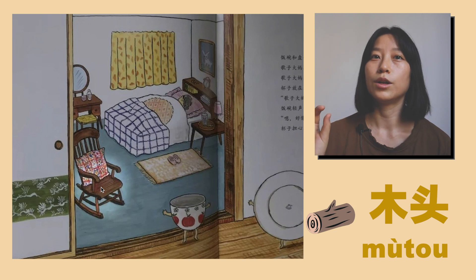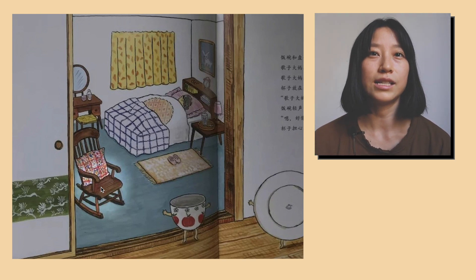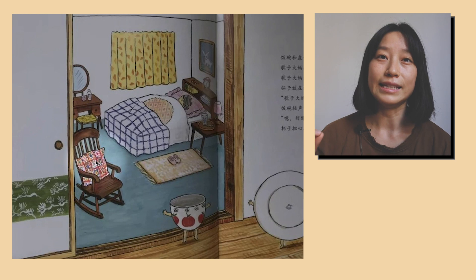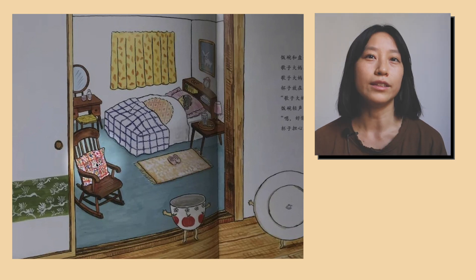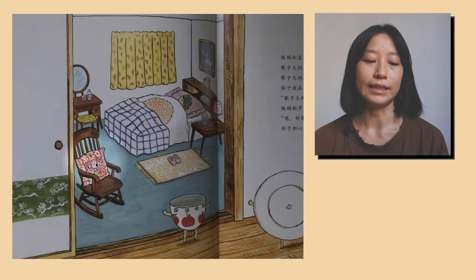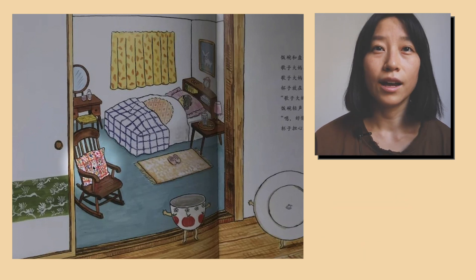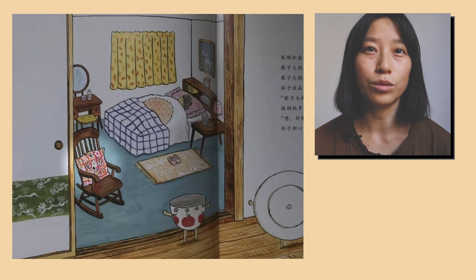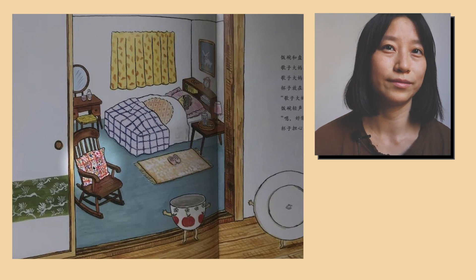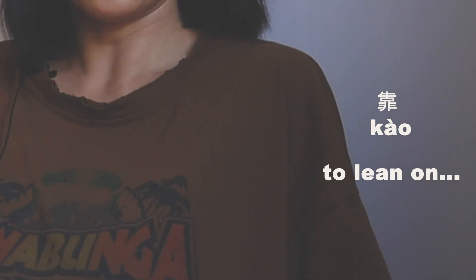這把椅子是木頭的。木頭。椅子上面有一個靠背。靠背。靠是被靠。 (This chair is made of wood. Wood. On the chair there is a backrest. Backrest. 靠 means to lean against.)